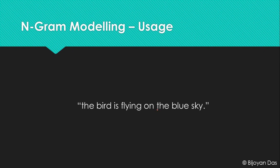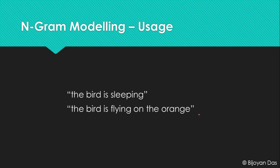We only considered the best case here. Since we select at random, we might also get something like 'the bird is sleeping' or 'the bird is flying on the orange', and we'd stop there because we don't have a trigram for 'bird is sleeping' or 'on the orange'. This is all about n-gram modeling, and using it we are going to build a text-filler or autocomplete feature.